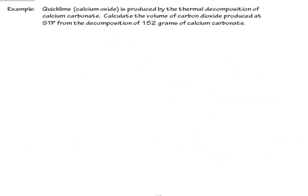All right, so let's see what else we can do with some stoichiometry. This is a good one. Quicklime (calcium oxide) is produced by the thermal decomposition of calcium carbonate. Basically, we're going to heat it. Calculate the volume of carbon dioxide produced at standard temperature and pressure from the decomposition of 152 grams of calcium carbonate. Let's get a balanced equation.